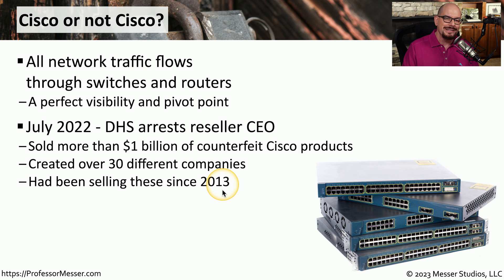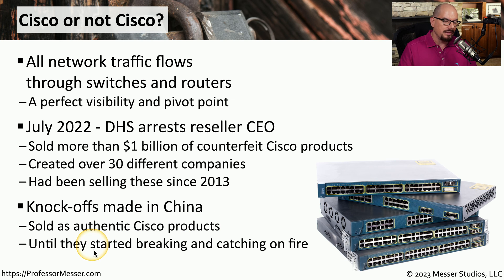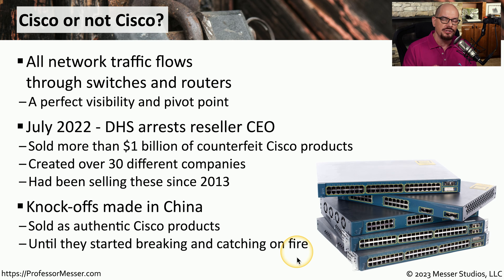He had been selling these products since 2013, meaning hundreds or even thousands of counterfeit switches and routers had been sent to people's networks, each one a potential security concern. The Department of Homeland Security found that most of these devices were being manufactured in China and distributed to companies all over the world. They seemed to look and act like Cisco products, but people quickly found they started breaking and in some cases catching on fire. This is certainly not the only documented case of counterfeit hardware, so make sure you check all hardware before implementing it into your production systems.